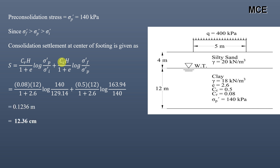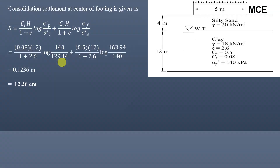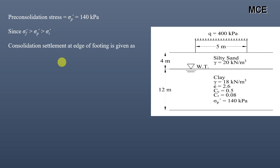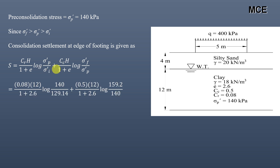Similarly, for the consolidation settlement at the edge of the footing: the preconsolidation stress is 140 kPa, and the final effective stress at the edge (159.2 kPa) is again greater than the preconsolidation stress, which is greater than the initial effective stress. The same formula applies, with only the final effective stress changing to 159.2 kPa. All other values — initial effective stress, preconsolidation stress, clay height, and void ratio — remain the same.